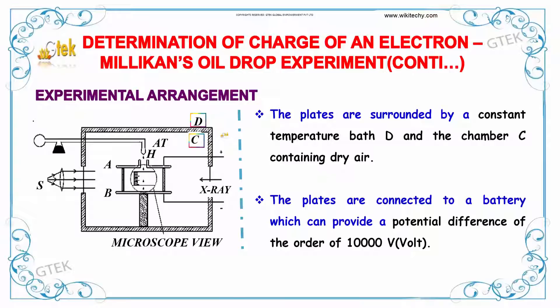The plates are surrounded by a constant temperature bath — that's the D and C chamber — which contains dry air. The plates are connected to a battery with a potential difference of 10,000 volts.